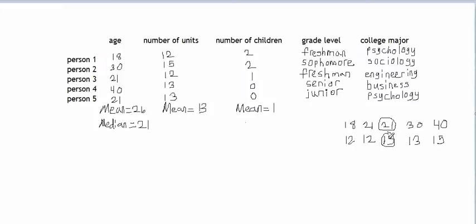One important thing to remember is that you have to put the data values in order from lowest to highest before you find the median. It would be incorrect to just say that the third data value in this column is the median because these values aren't in order from lowest to highest.